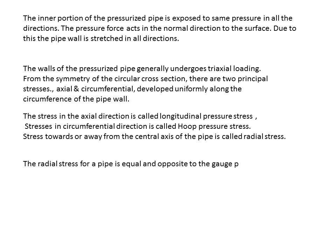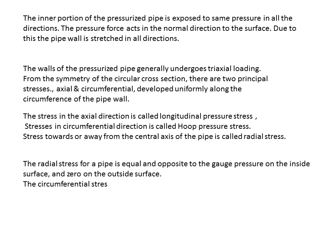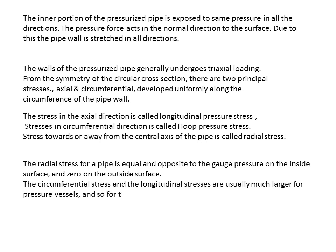Stresses toward or away from the central axis are called radial stress. The radial stress equals and is opposite to the gauge pressure on the inside surface and zero on the outside surface. The circumferential and longitudinal stresses are usually much larger for pressure vessels, so for thin-walled instances the radial stress is usually neglected. We primarily have two pressure stresses: axial and circumferential. However, we will examine all three stress forms.